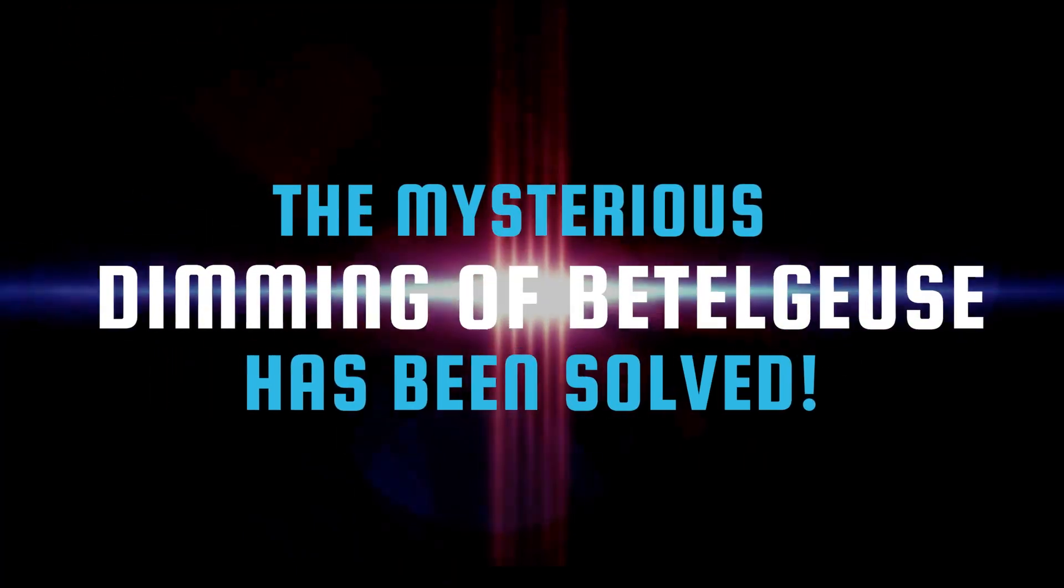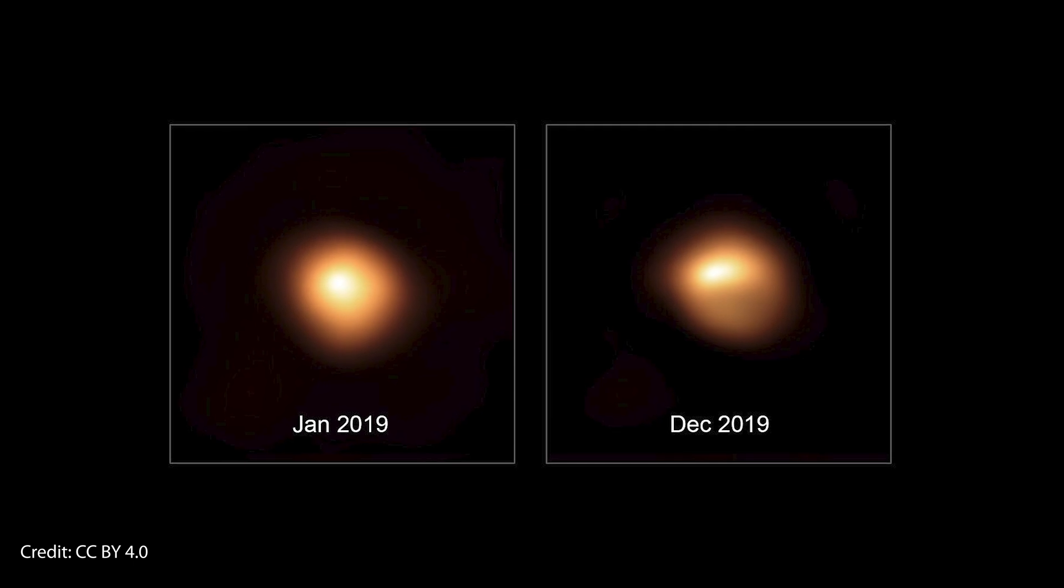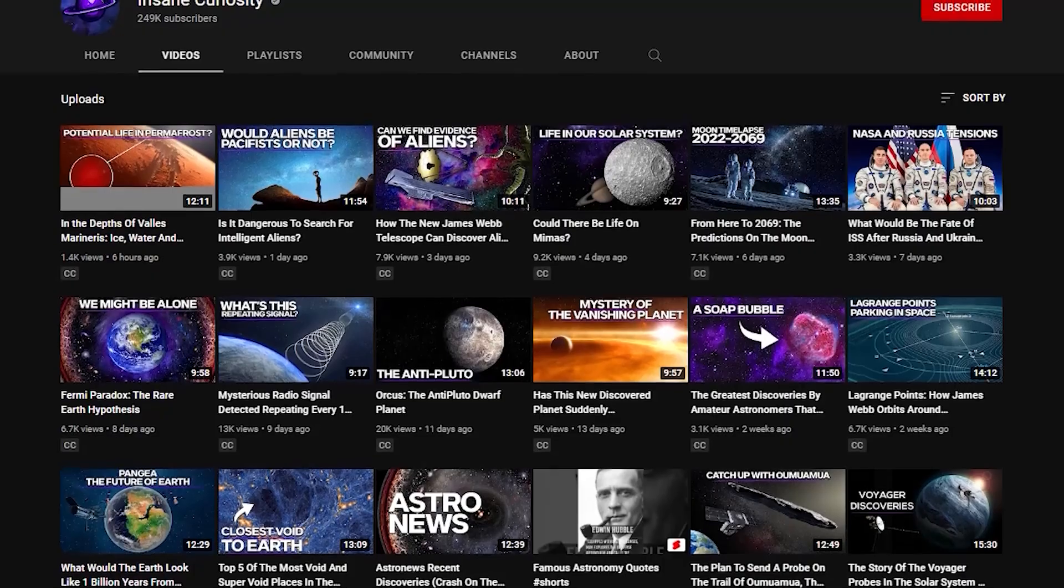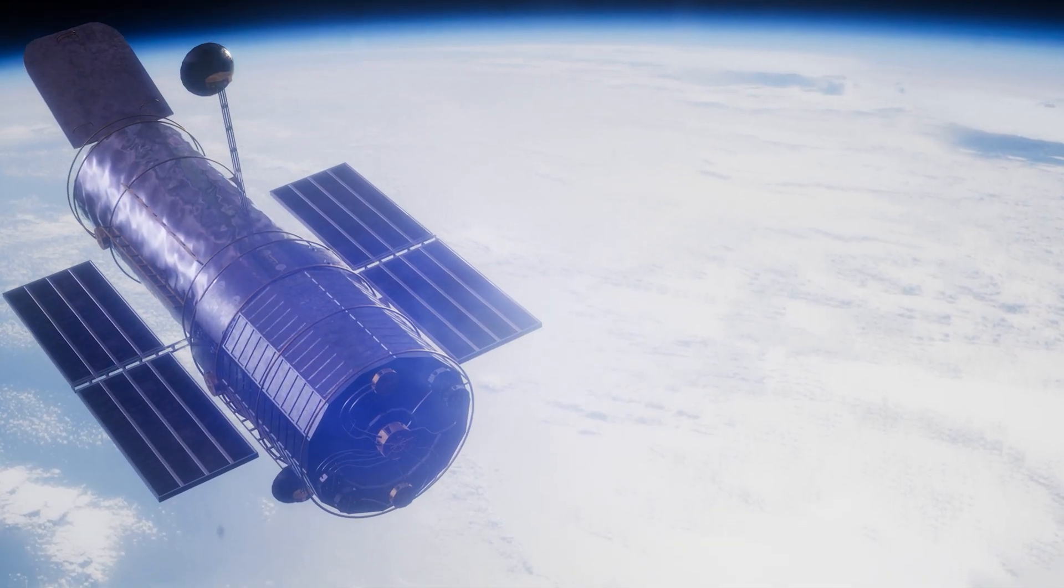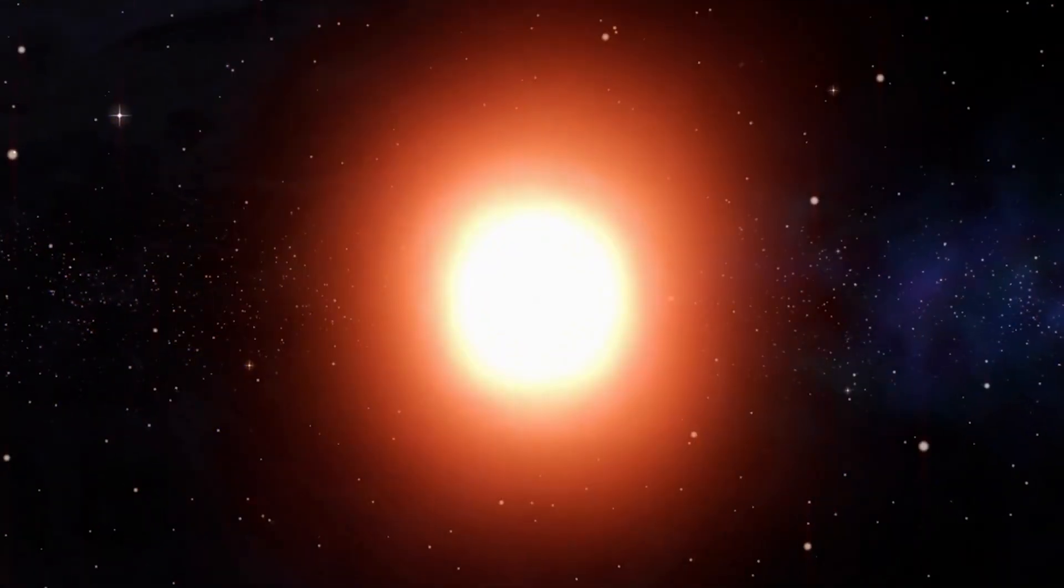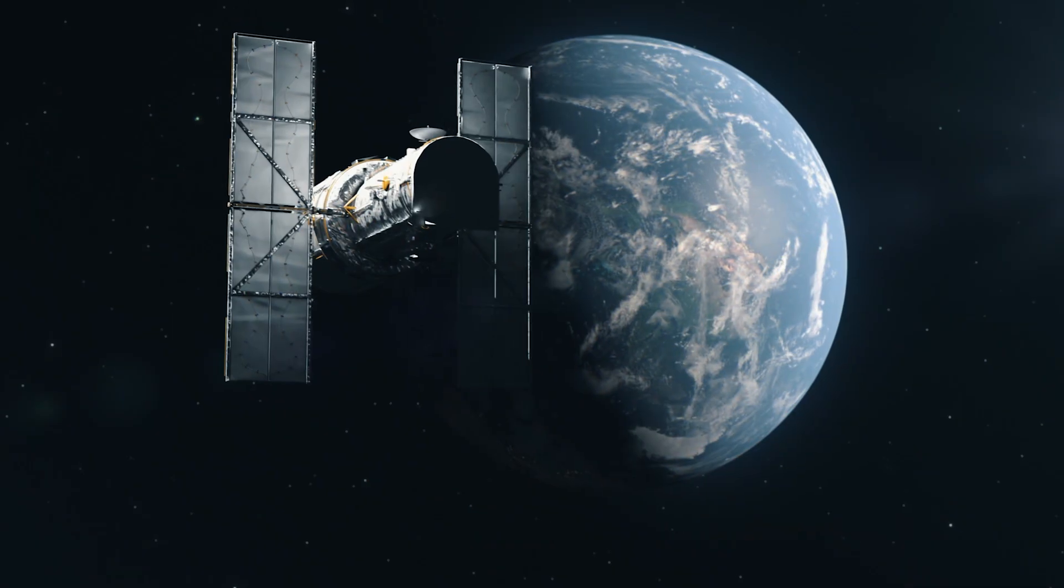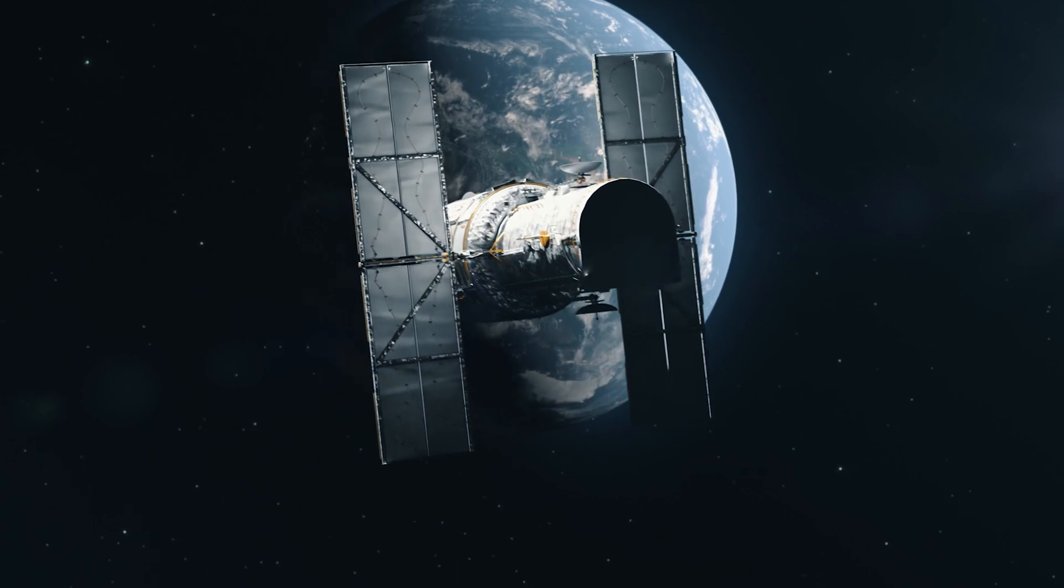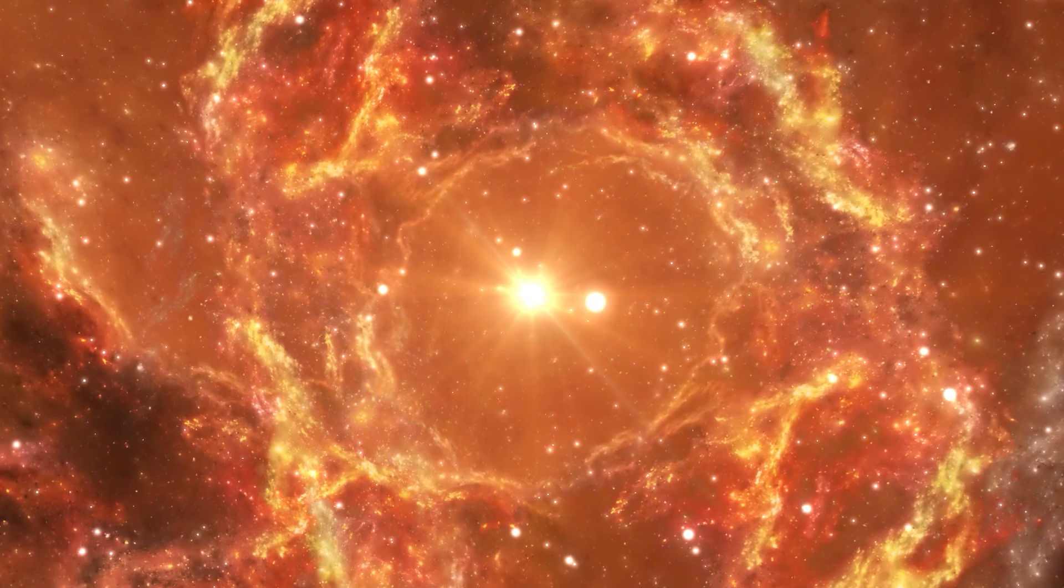The mysterious dimming of Betelgeuse has been solved. The mysterious event began back in 2019, and we already made some videos about the reasons for this last year. But new evidence and data from Hubble has come to light that explains the dimming of this red giant and answers the question about what caused this event. Now NASA's Hubble telescope has released new data and information about this red giant's mysterious phenomenon.